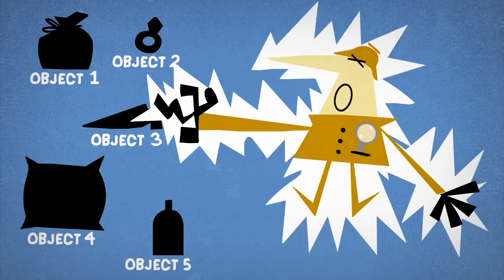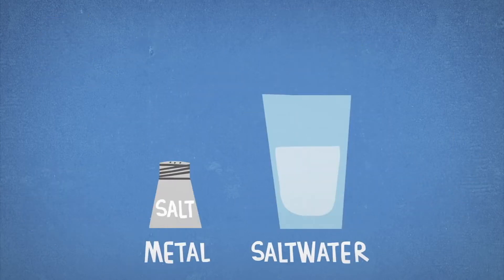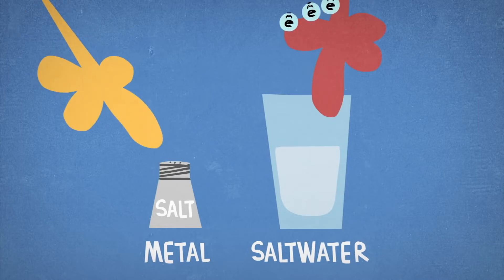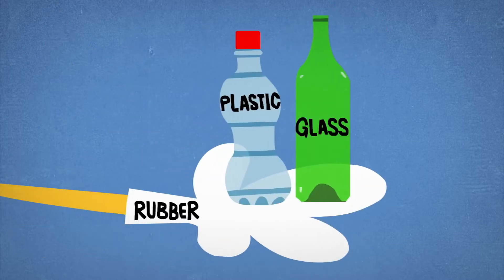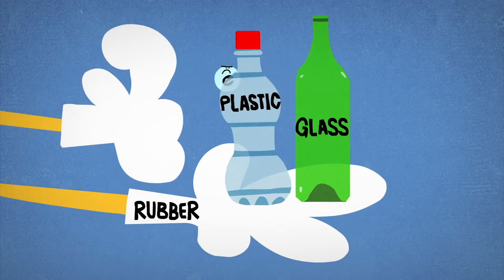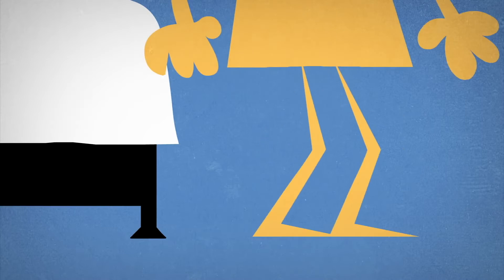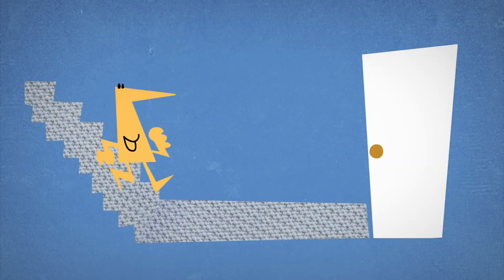This process doesn't happen with just any objects — otherwise, you'd be getting zapped all the time. Conductors like metals and salt water tend to have loosely bound outer electrons, which can easily flow between molecules. On the other hand, insulators like plastics, rubber, and glass have tightly bound electrons that won't readily jump to other atoms. Static buildup is most likely to occur when one of the materials involved is an insulator.